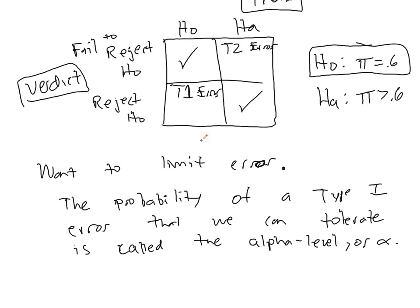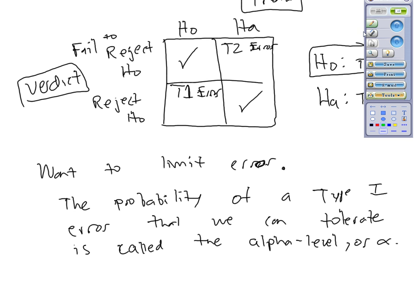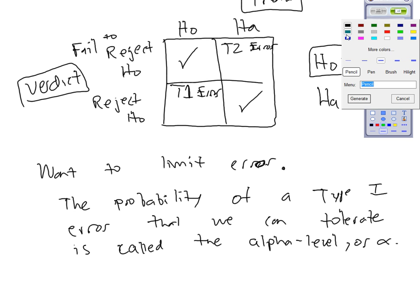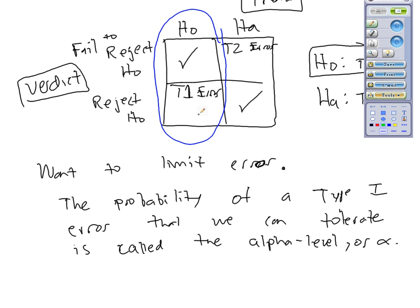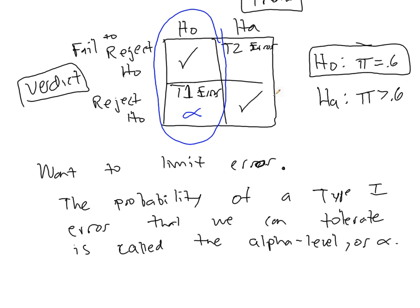Given that the null hypothesis is true, if you are in this window, in basically this column right here, then the probability of a Type I error that we're willing to tolerate is called alpha. Given that the null hypothesis is true, that means 1 minus alpha of the time, you've made a correct decision.